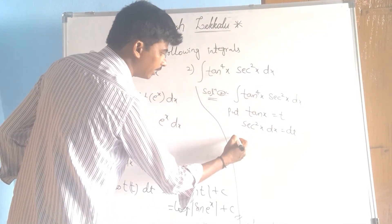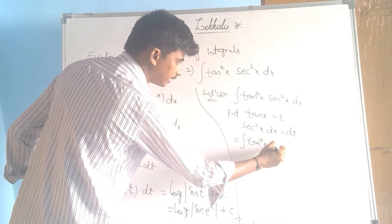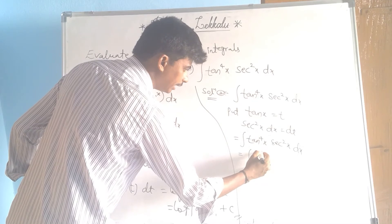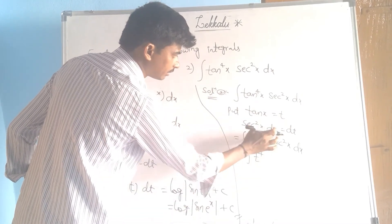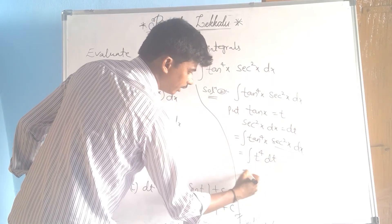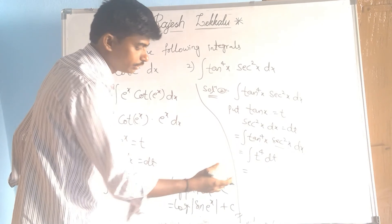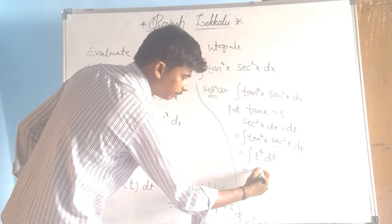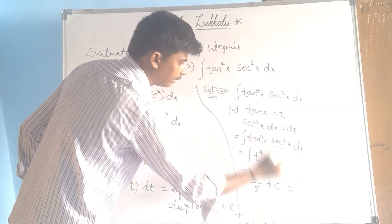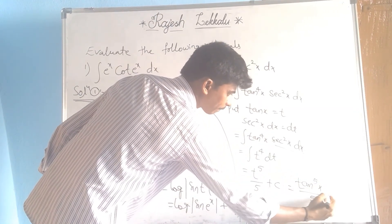Substituting here: integral of tan⁴x·sec²x dx equals integral of t⁴ dt, since tan(x) equals t and sec²x dx equals dt. Now using the basic formula integral of xⁿ dx, that gives t⁵/5 + C. Substituting back, t equals tan(x), so the answer is tan⁵x/5 + C.